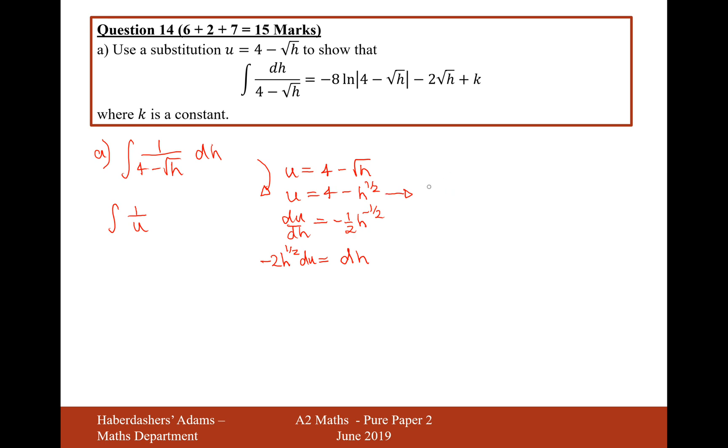Now we need to rearrange this to get dh. So if I move the dh onto the other side and move all of this stuff onto the left, it's going to be minus 2 from timesing by 2, and then timesing by h to the half would be h to the half du. But we can replace h to the half with 4 minus u. So what I'm going to be putting in here is minus 2 times 4 minus u du.